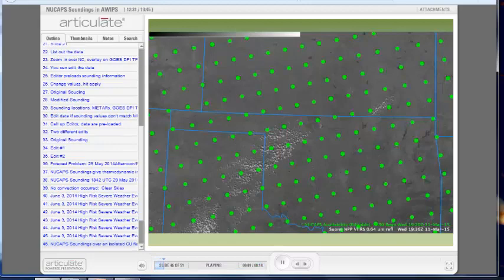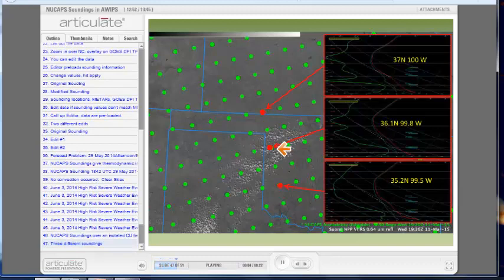How far can you push the NuCAP soundings to give you information? Here they are spread over an isolated cumulus field over Oklahoma. Do you expect the sounding differences running north-south across that cumulus field in western Oklahoma to be strong or subtle?